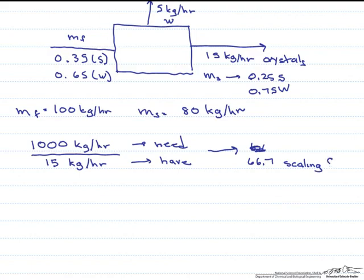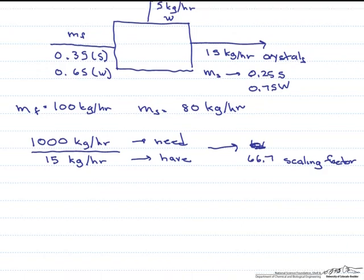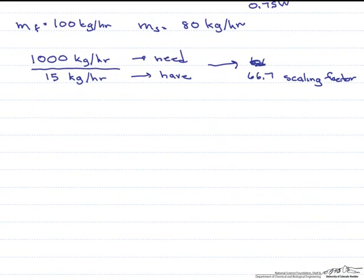And so what can we do with that? Well, we can multiply any flow rate in our system to find out what flow rate or exiting flow rate we would need for a thousand kilograms per hour of crystals.